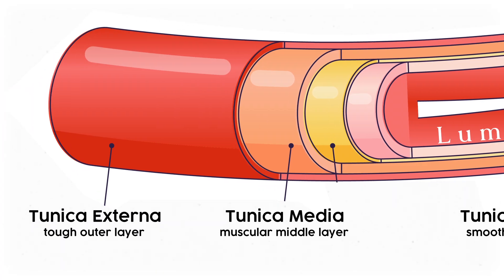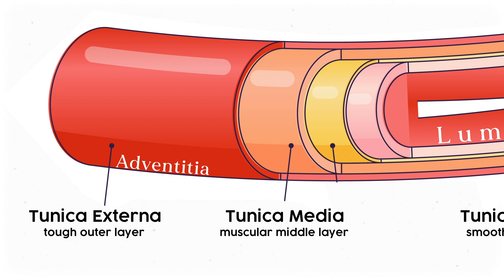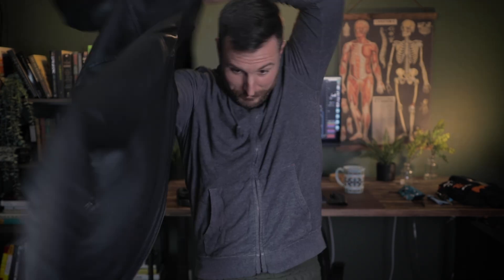To protect us against the turbulent environment of the human body, we're going to need even more. The tough layer on top is the tunica externa, sometimes called the tunica adventitia. It's a layer of connective tissue — mostly type 1 collagen and some elastic connective tissue in the arteries. This layer connects the fleshy blood vessels to organs so they're not just flailing around. The externa is like your leather jacket — tough and durable.